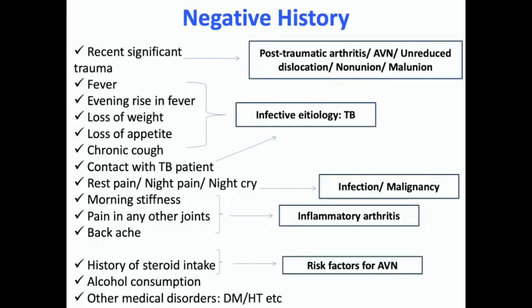Then the negative history: recent significant trauma, fever and the type of fever, cough, contact with a TB patient, whether the patient has morning stiffness, and whether other joints are involved. Depending upon the symptomatology, you present a negative history that will support your diagnosis at the end of the day.